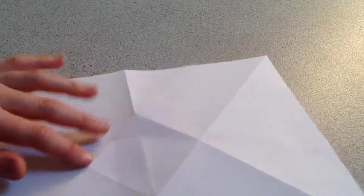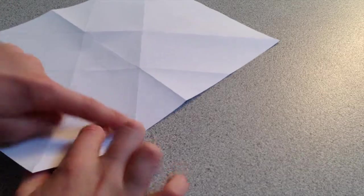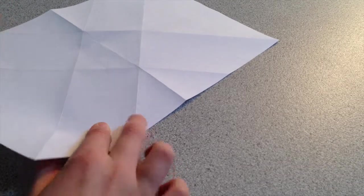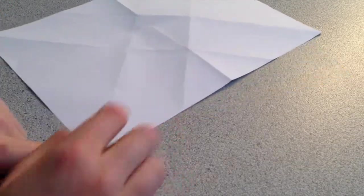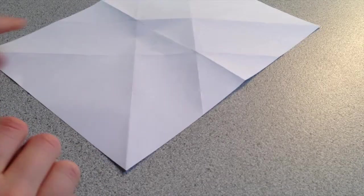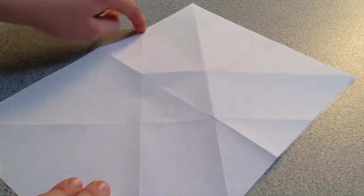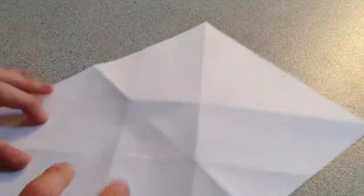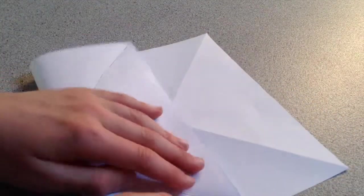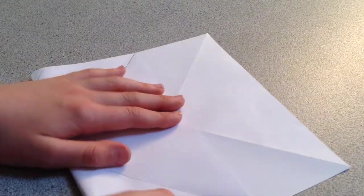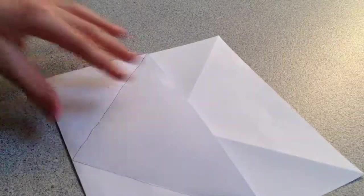Turn over and then make a fold that runs through the intersection of these points, which will make this corner and this corner line up with this crease and this crease. So fold that up. Unfold.